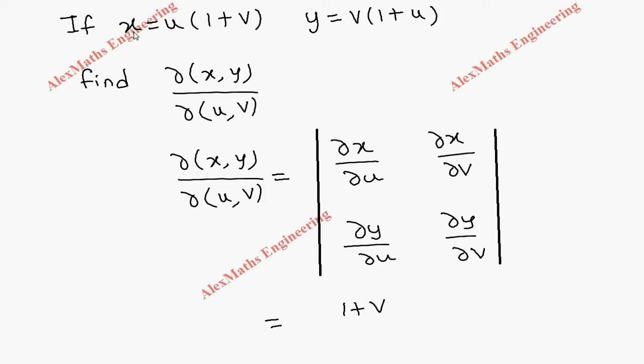The differentiation of (1+v) is just 1, so we're left with only u. Then the partial differentiation of y with respect to u: v is constant, giving us v.